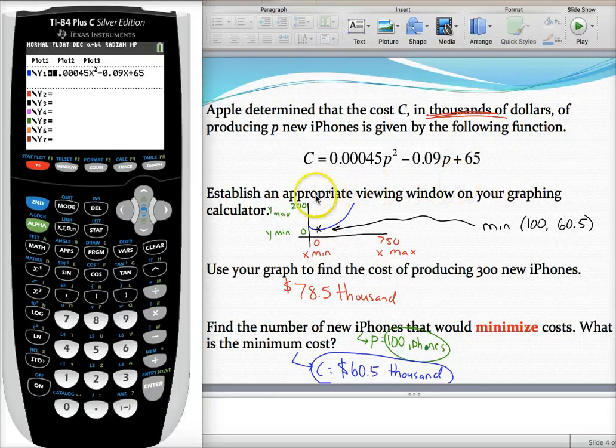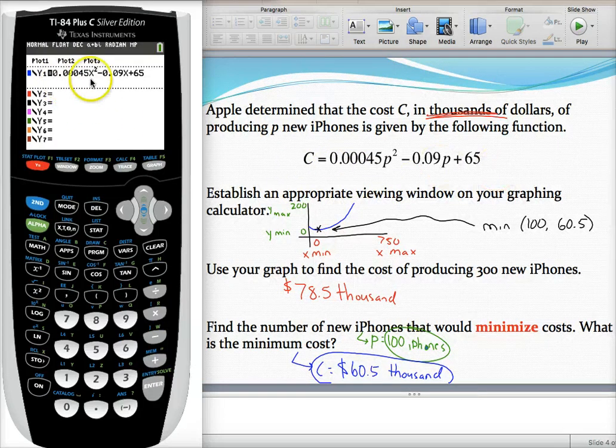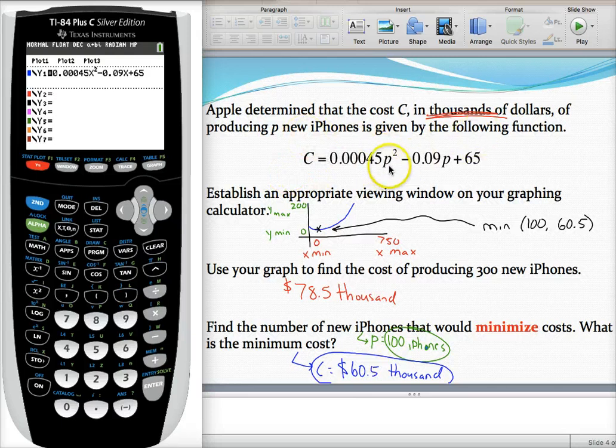Both will involve setting up a window and using the min or max features on our calculator to find the coordinates of a vertex. I've already typed in my equation here. I've replaced P with X. This gives me the cost in thousands of dollars for producing some number of iPhones.